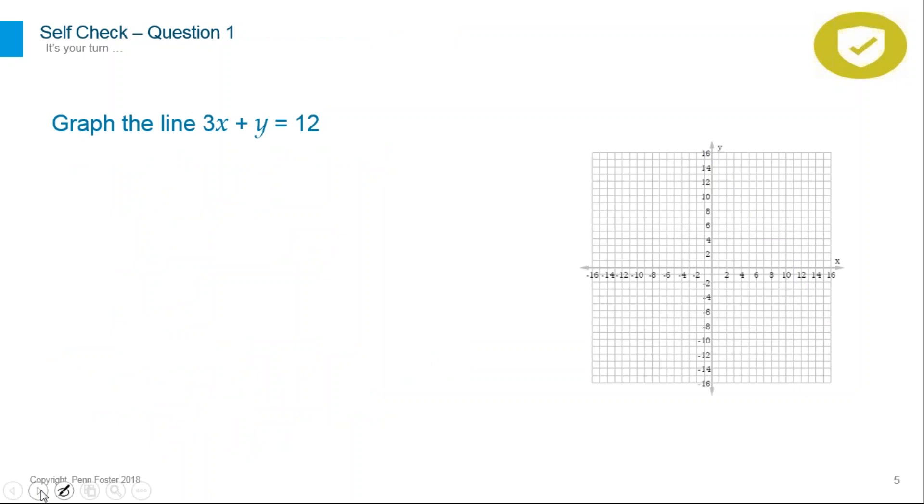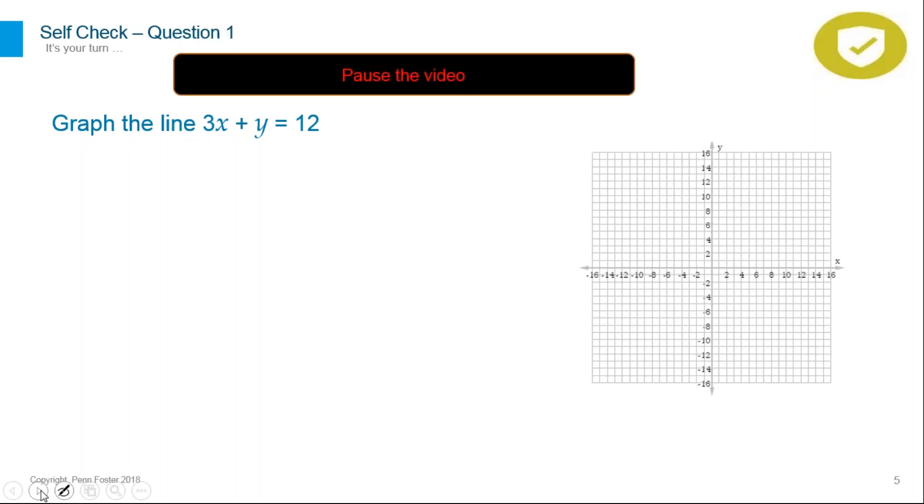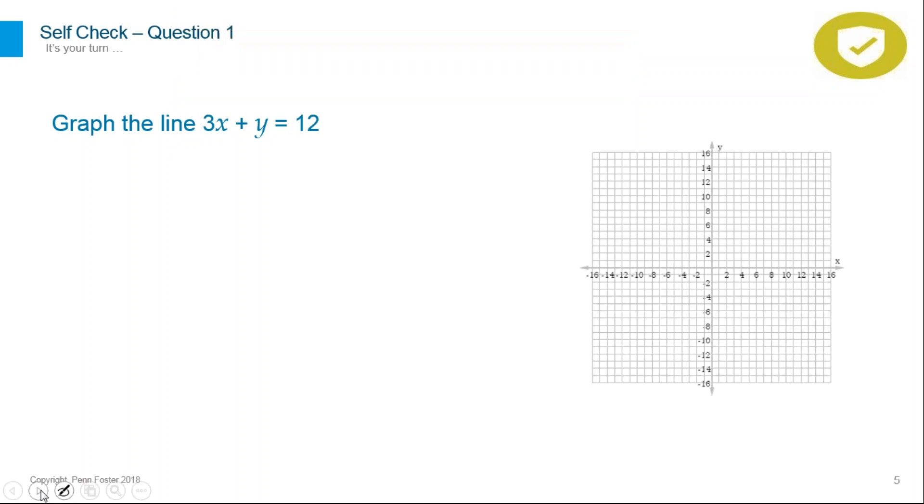This is a practice question. We will use the double intercept method to graph the line 3x + y = 12. Let's follow the four steps. Step one, find the y-intercept by setting x = 0. So 3(0) + y = 12. Three times zero is zero, so y = 12. The first point is (0, 12).